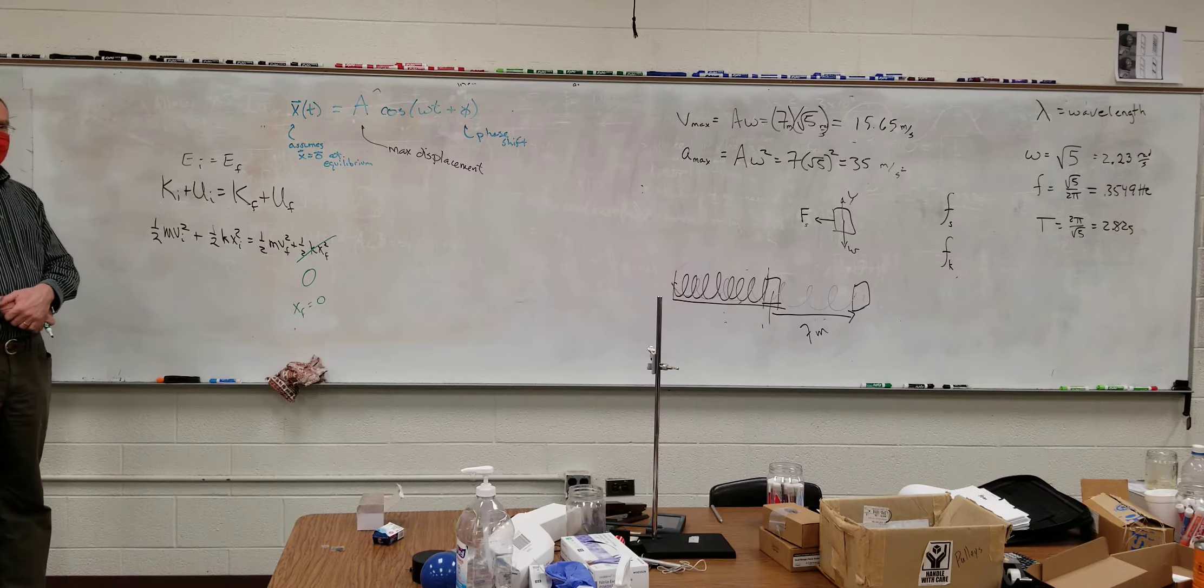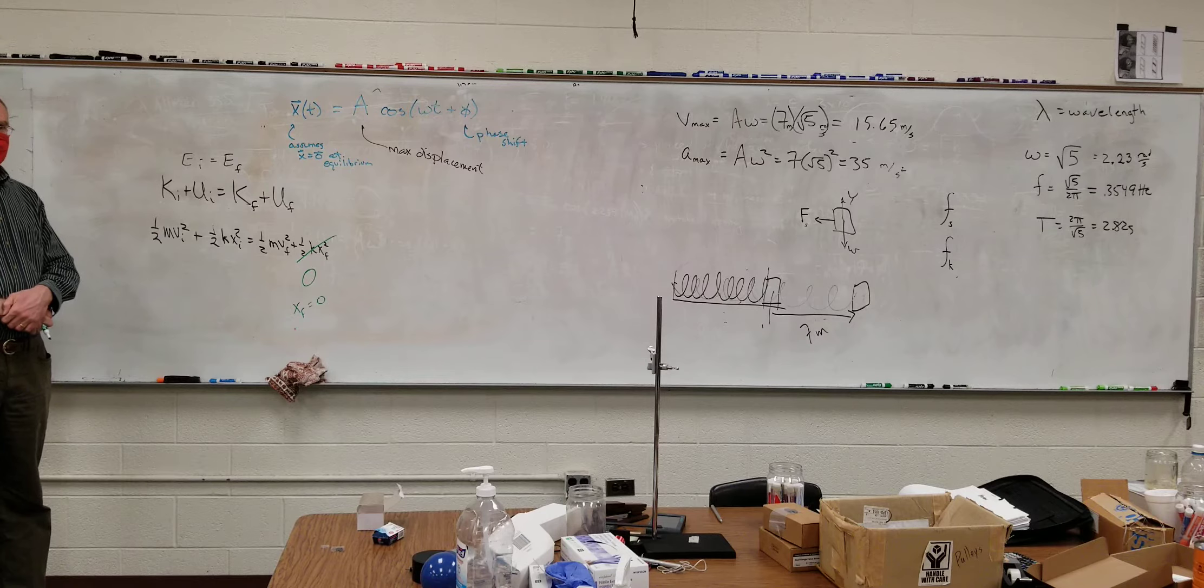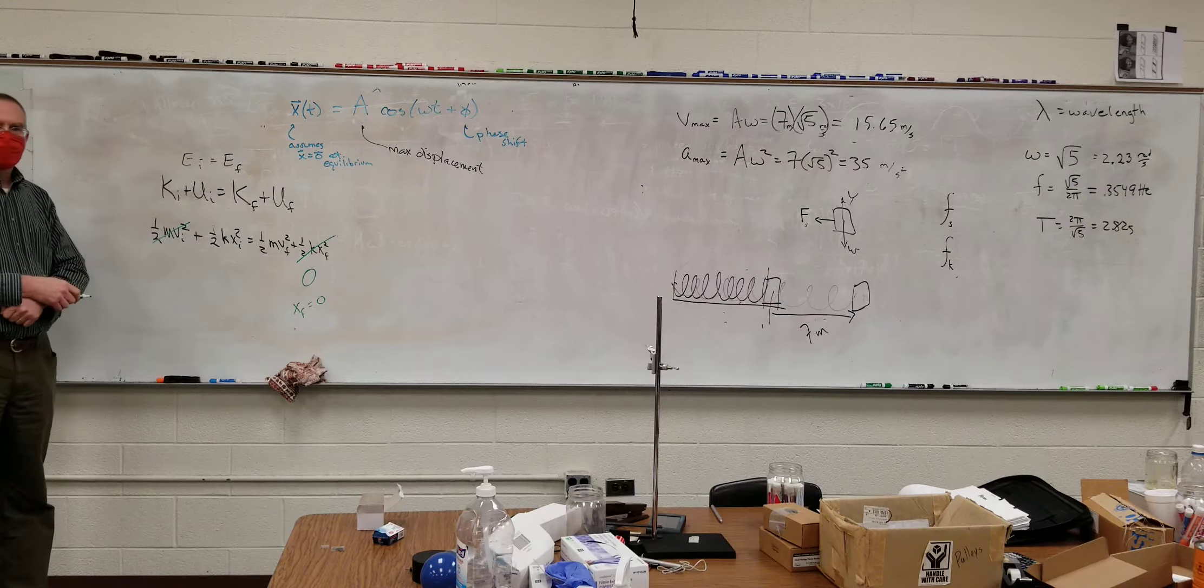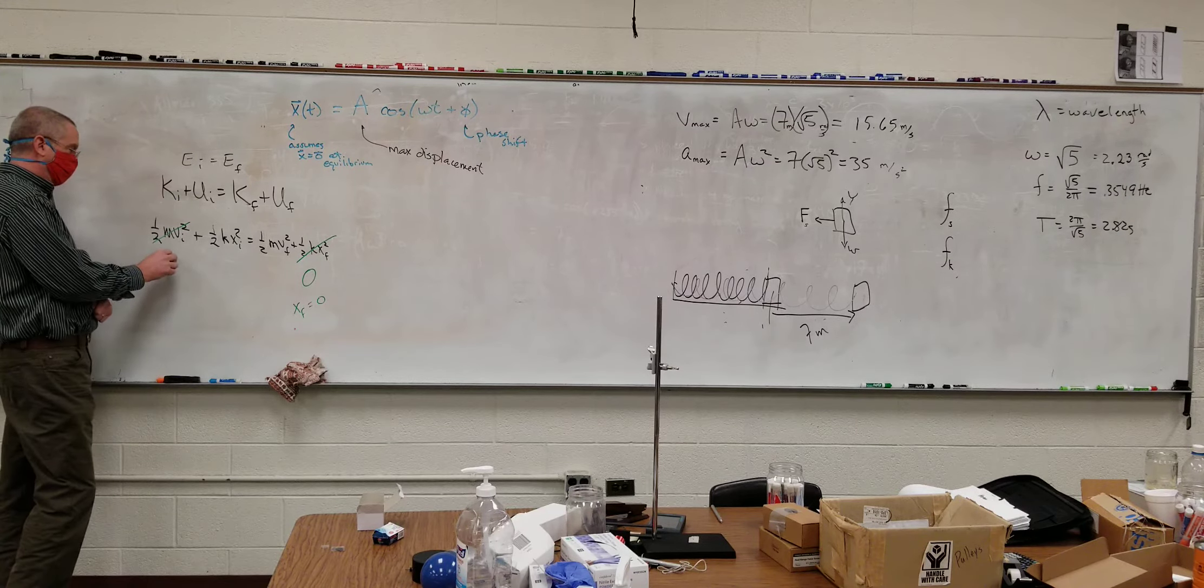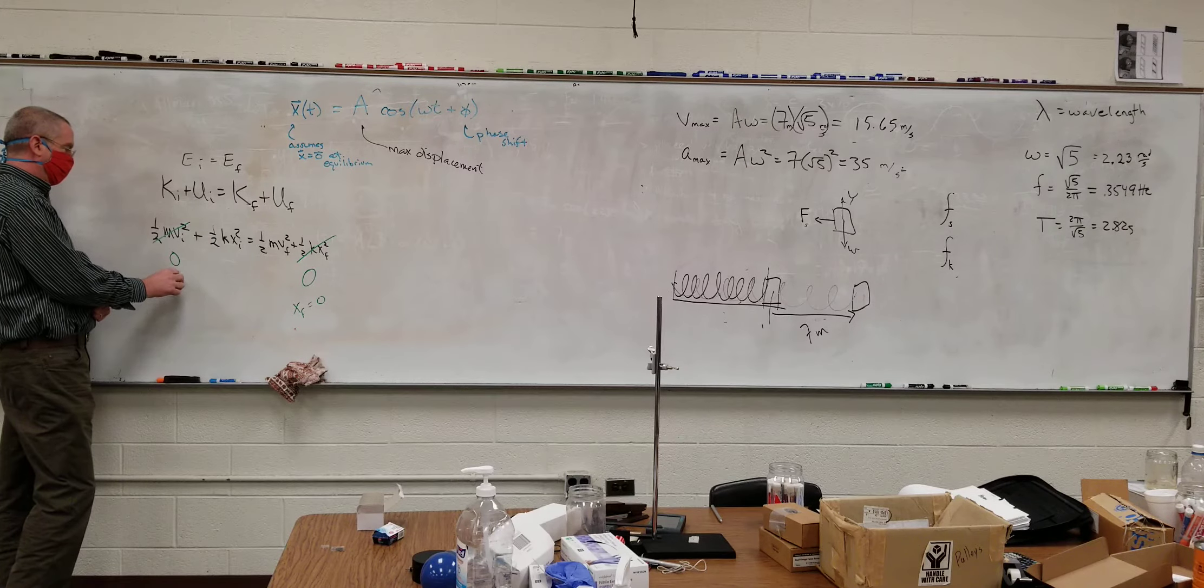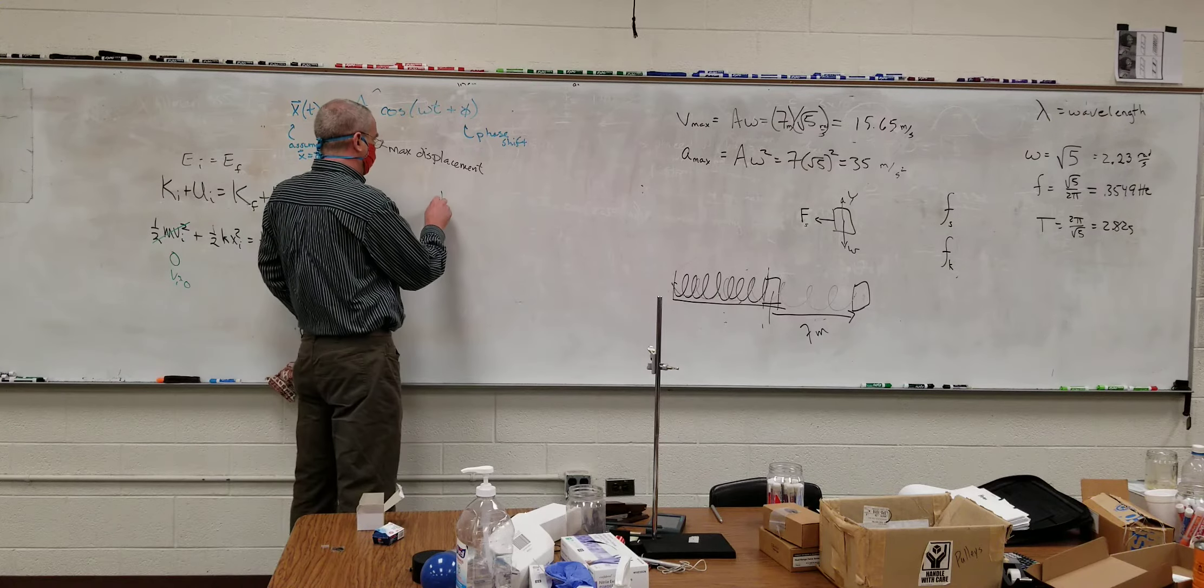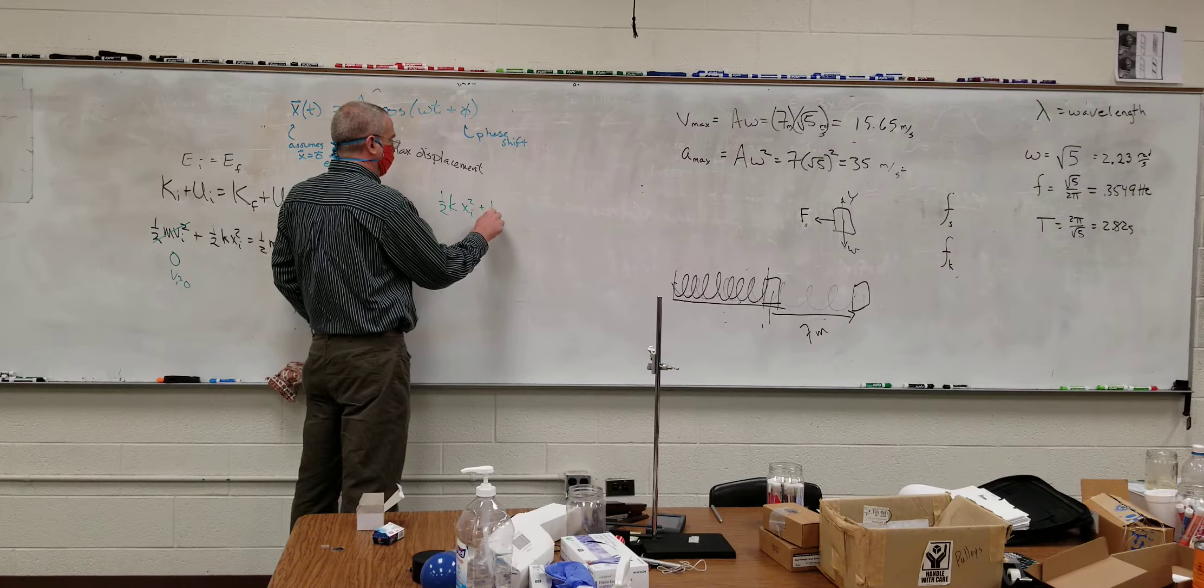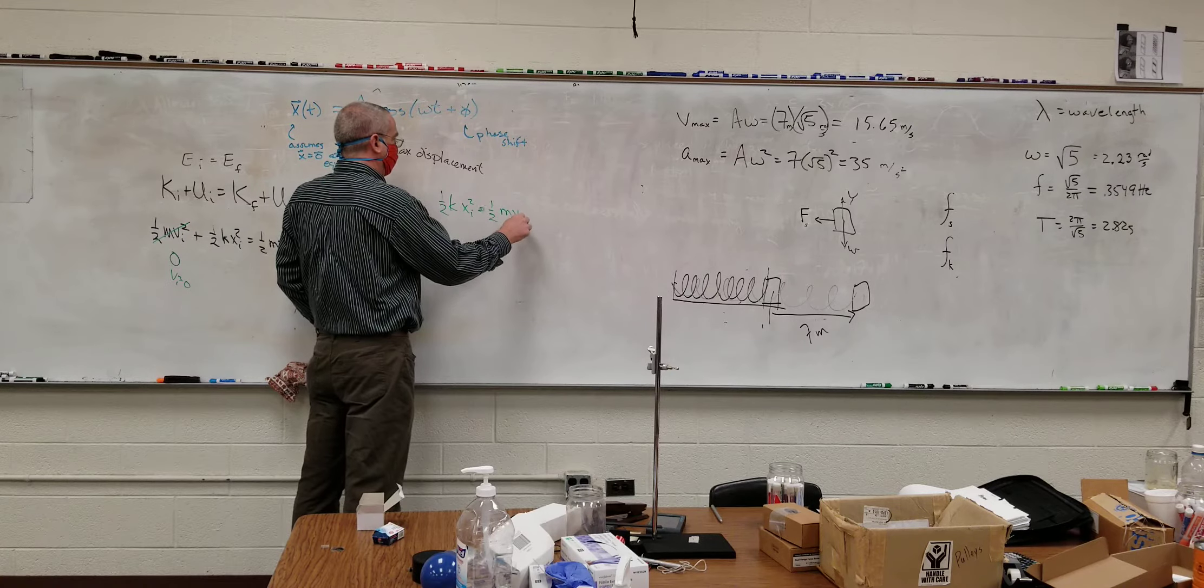What else can we get rid of? Initial kinetic energy? Yeah, why? Because it's not moving initially. Yeah, that's where I let go. So basically, we're just our equation down to two things, which happens a great deal, but not always. So one-half kx initial squared equals one-half M vf squared.